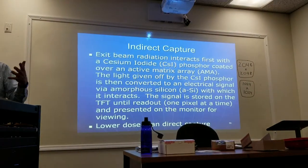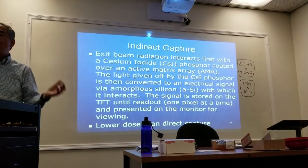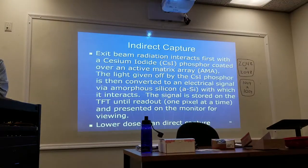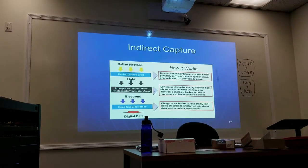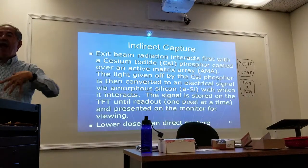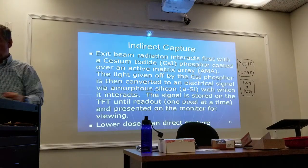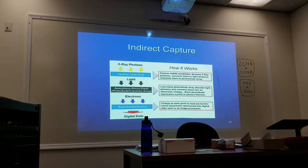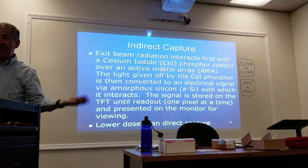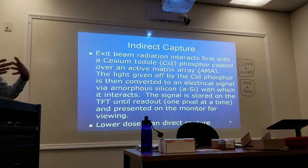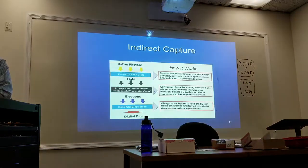With direct capture, the x-ray that goes through the patient is converted directly into an electrical signal — it skips the light stage. For indirect capture: the exit beam radiation first interacts with cesium iodide phosphor coated over a matrix. The x-ray photons strike the cesium iodide, which gives off light, and that light is converted to an electrical signal using amorphous silicon.